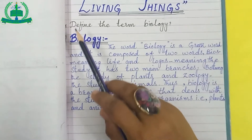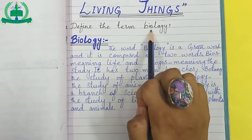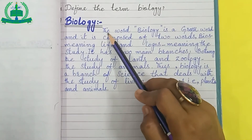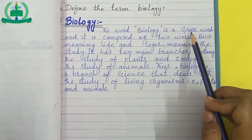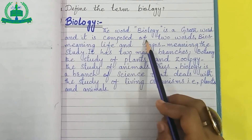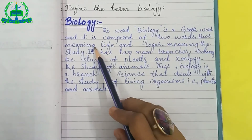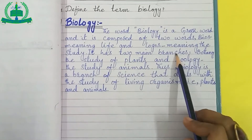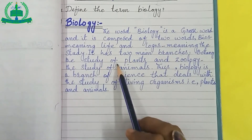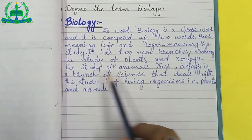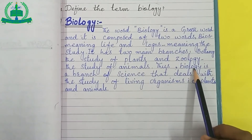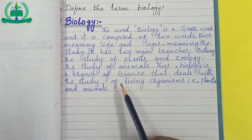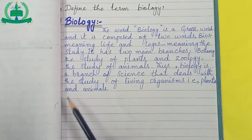Write question number 1 in your journal: Define the term biology. Write the heading 'Biology.' The word biology is a Greek word composed of two words — bios meaning life, and logos meaning the study. It has two main branches: Botany, the study of plants, and Zoology, the study of animals. Thus, biology is a branch of science that deals with the study of living organisms, that is plants and animals.